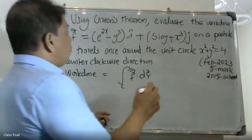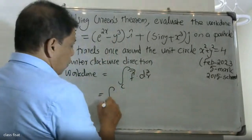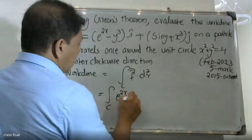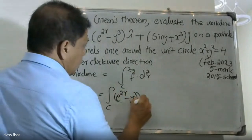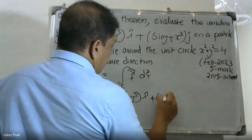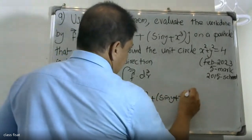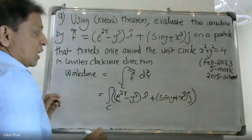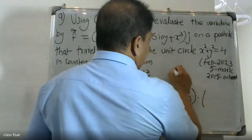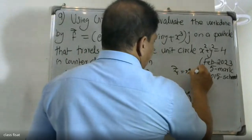So this is the integral over C of (y plus sin x) i plus (sin y plus x³) j dot dr, where dr equals dx i plus dy j.